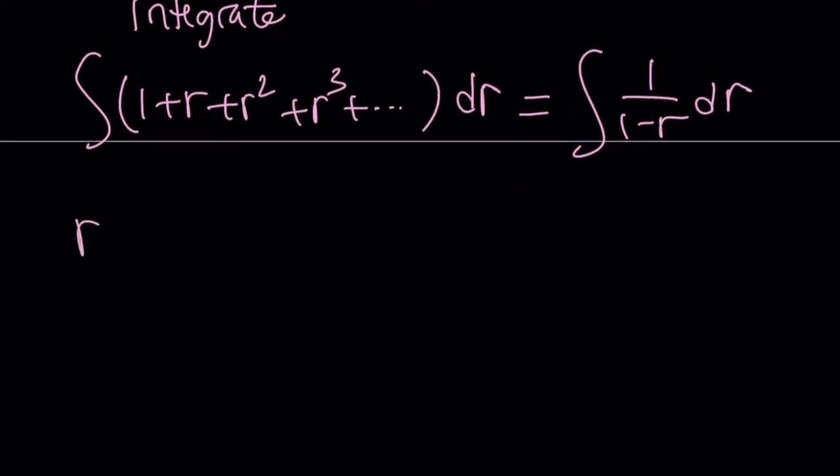If you integrate 1, you're going to get r. If you integrate r, you're going to get r squared over 2. r squared is going to give you r cubed over 3, r to the 4th over 4, and so on. r to the n divided by n. Basic power rule, right? And of course, that's going to go on forever.